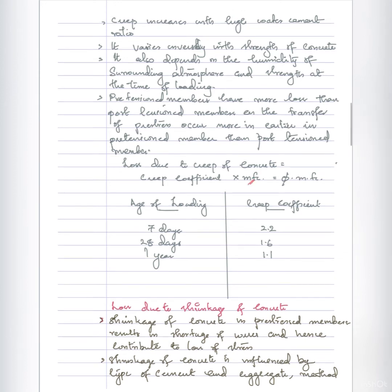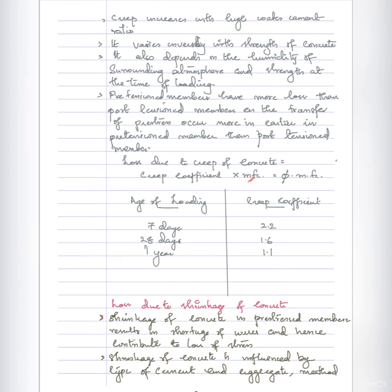We multiply the elastic strain by a creep coefficient, denoted phi. The creep coefficient depends on the age at loading. In 7 days, the creep coefficient has a certain value. In 28 days, the creep coefficient is 1.6. In 1 year, the creep coefficient is 1.1.